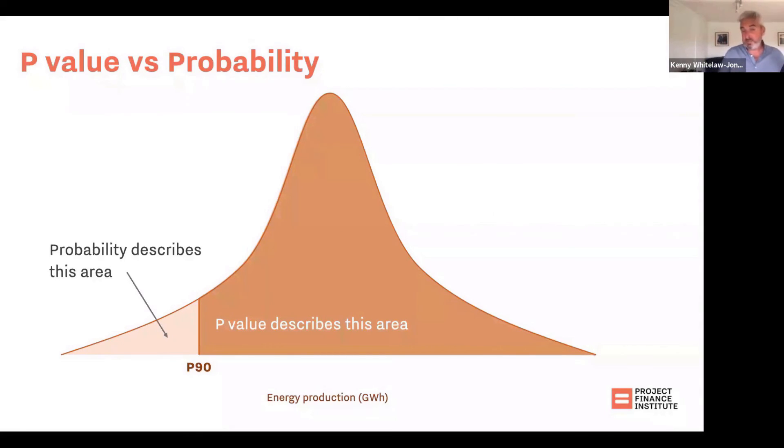Probability describes the 10%, the P-value describes the 90%, and that's really important because we have to take P-values and turn them into probabilities, and vice versa, when we start to look at Excel's functions. That's the first thing to be aware of when it comes to nomenclature. I'm going to be talking about probability and P-value, and that's the difference between those. The probability is 1 minus the P-value, and vice versa.